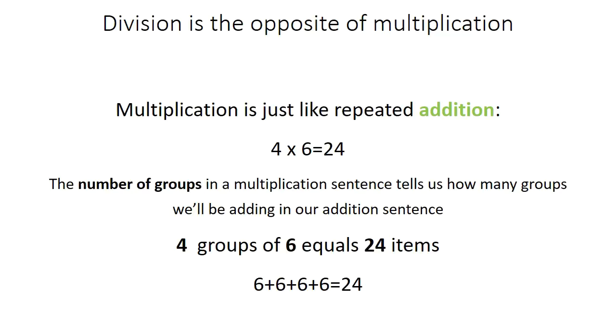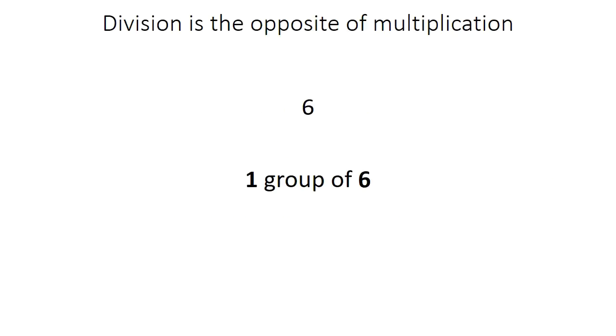The number of groups in a multiplication sentence tells us how many groups we'll be adding in our addition sentence. In this addition sentence, we'll add 4 groups of 6 to make 24.